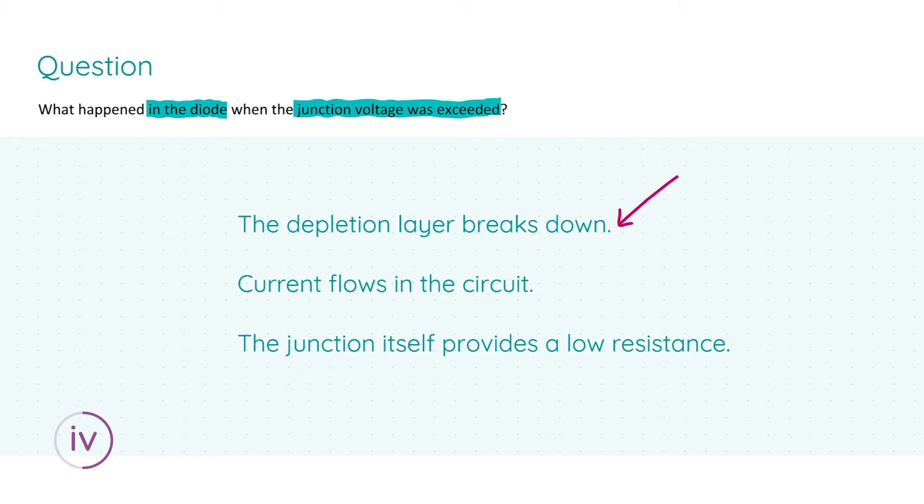Since this depletion layer breaks down, there is little resistance given by this junction, so we have a low resistance. Once this depletion layer is eliminated, current can flow throughout the circuit. I have three points down, and if you state any one of these three you will get three marks. However, if you know two, put down two; if you know three, put down three. Put down as many answers as you know even though it only asks for one because you can build up those marks.